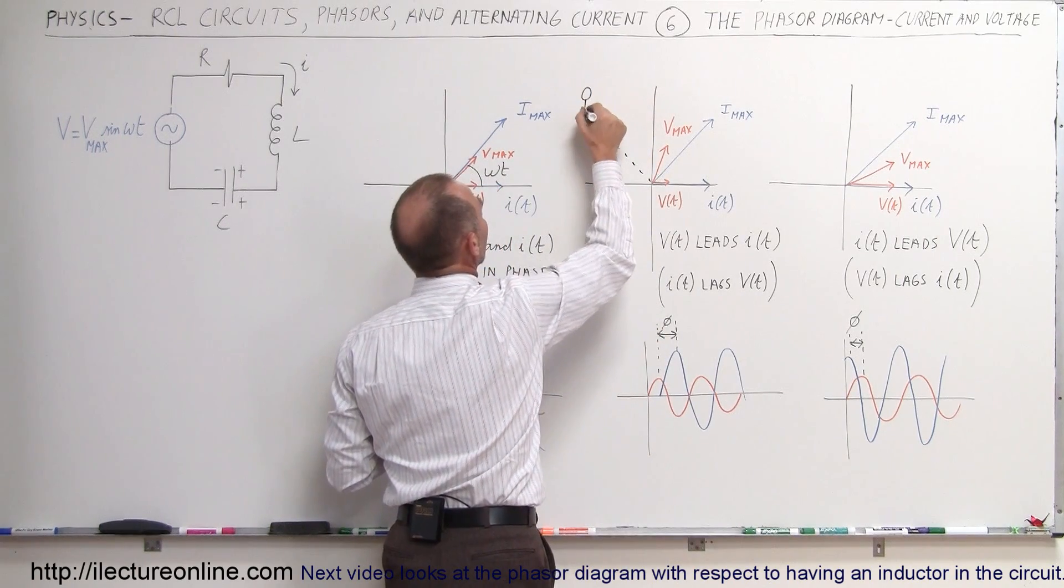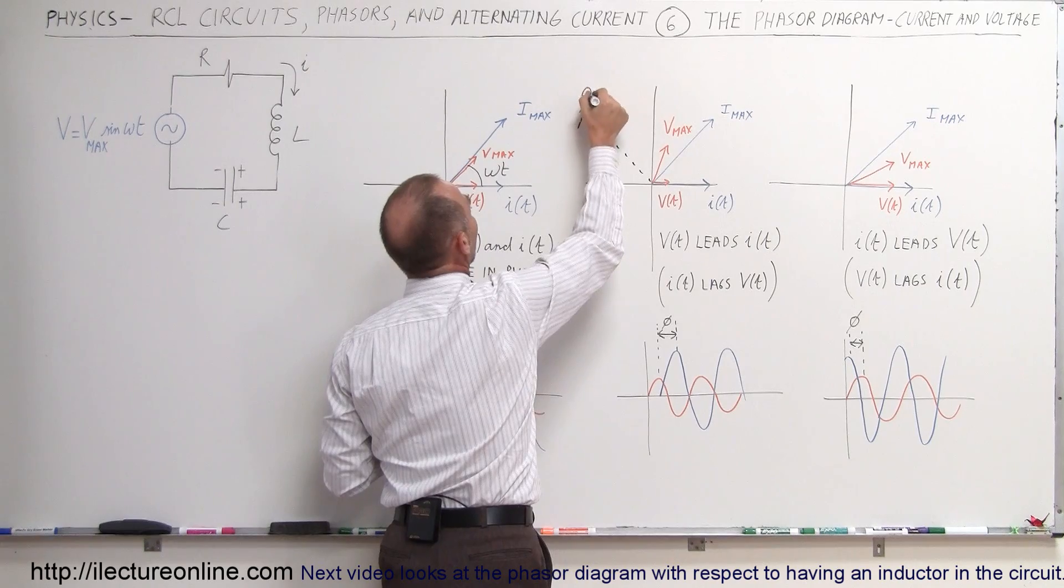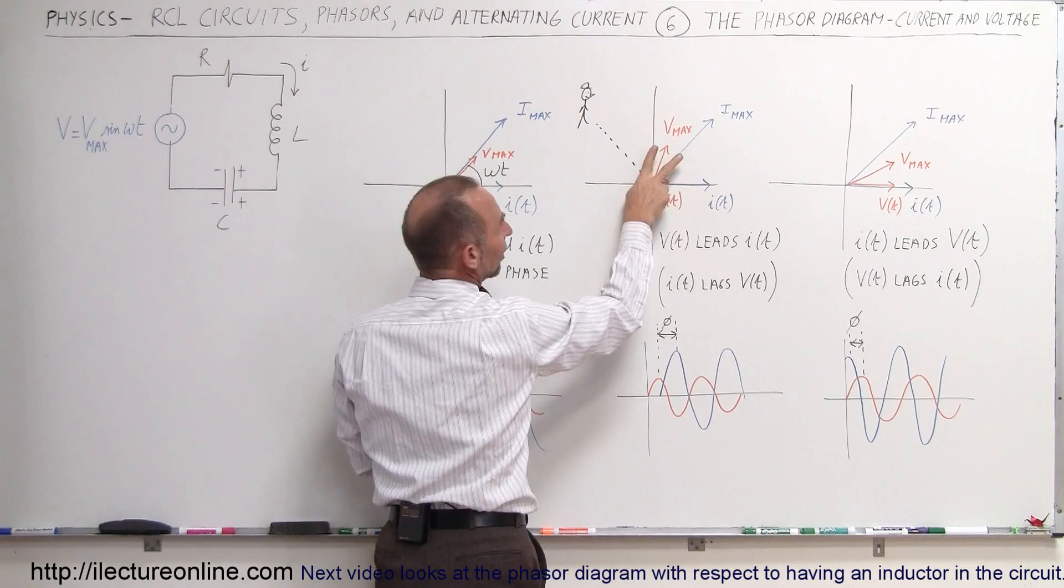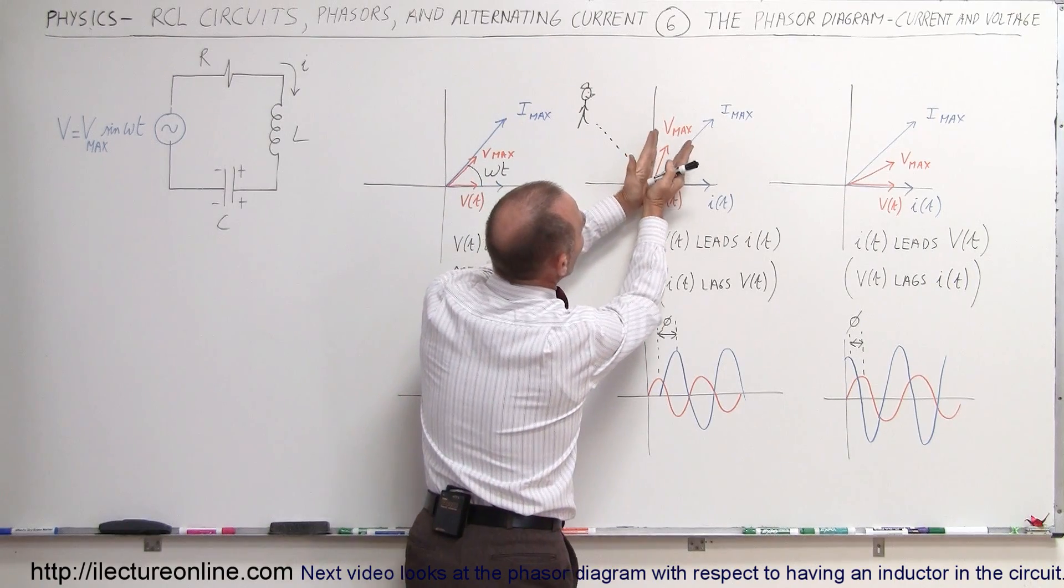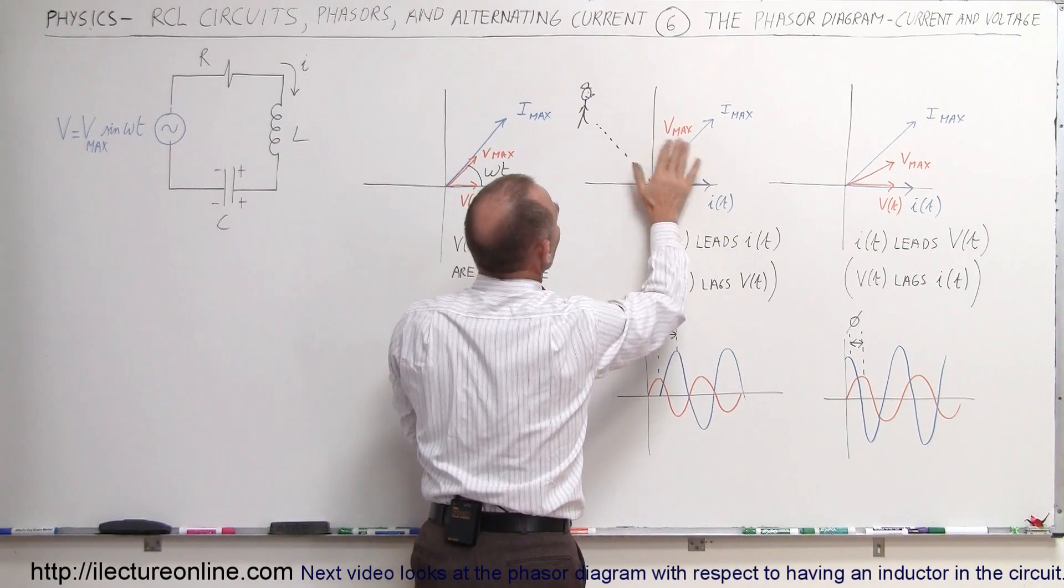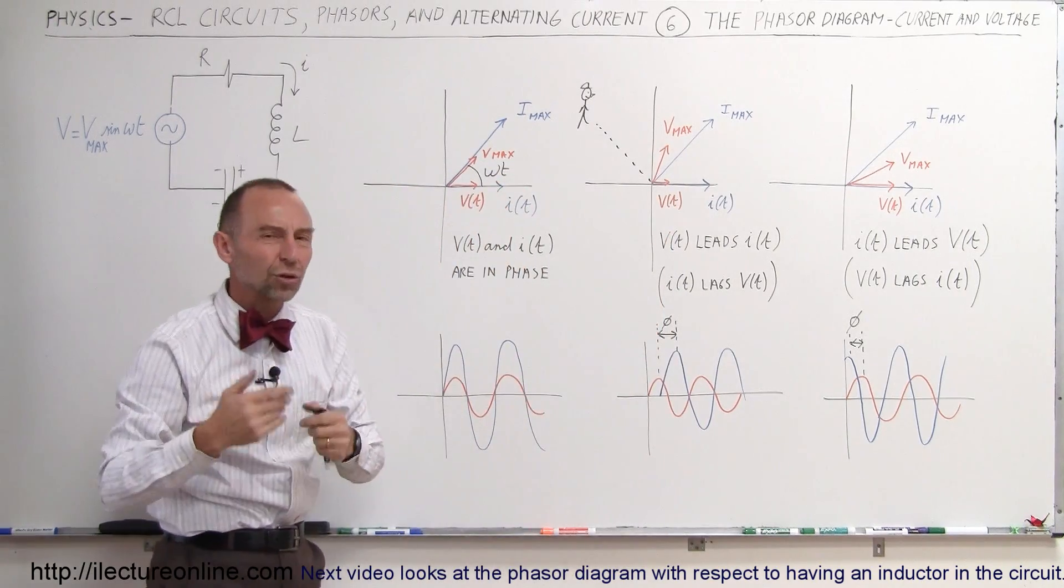This is kind of like the finish line and you're looking at the voltage and the current coming towards you. Who's going to get there first? They're going to keep that same angle between the two as they're rotating around like this, and so you can see that the voltage will reach that line before the current, so we can say that the voltage leads the current.